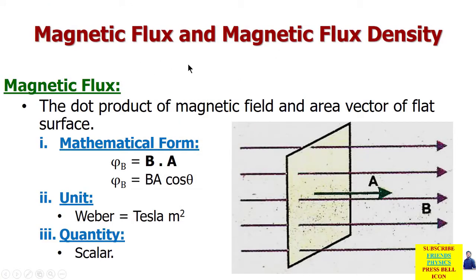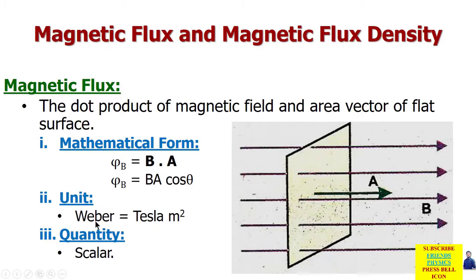Magnetic Flux: the dot product of magnetic field and area vector of flat surface is called magnetic flux. इसे यूँ भी define किया जा सकता है: the number of magnetic field lines passing through an area which is held perpendicular to the magnetic field. इसे Greek letter phi (φ_B) से denote करते हैं — B लिखने का मकसद है it represents magnetic field. यह dot product है magnetic field और area vector का: φ = BA cosθ. Magnetic flux को Webers में measure करते हैं, इसकी unit है Tesla·meter² जो Weber है। Magnetic flux एक scalar quantity है।